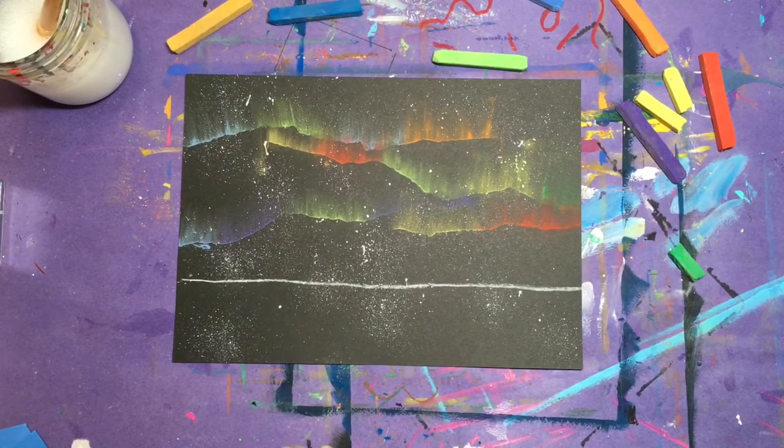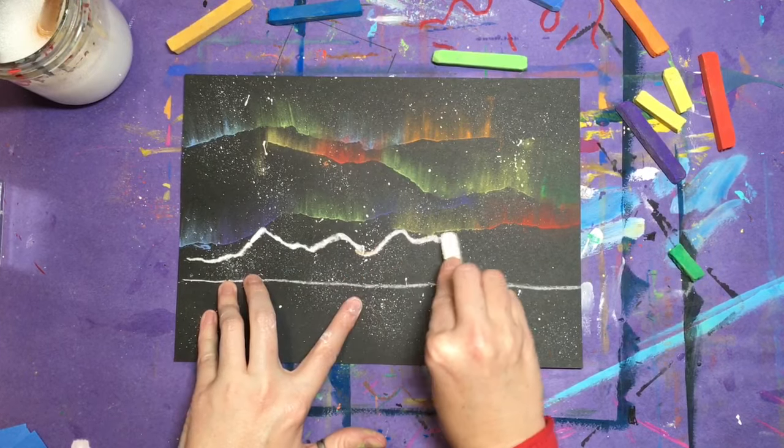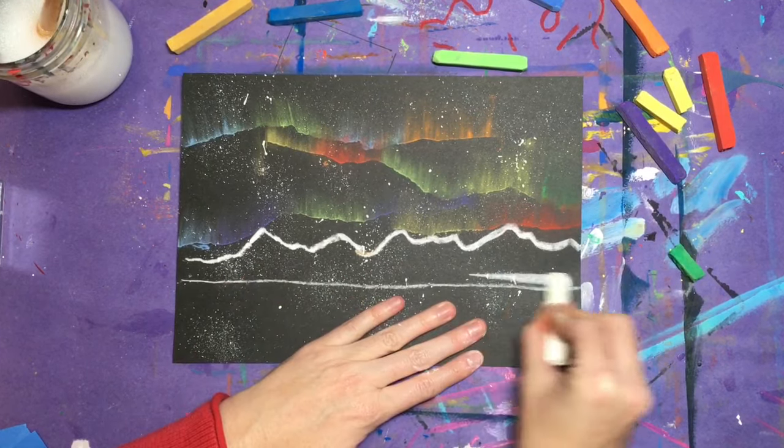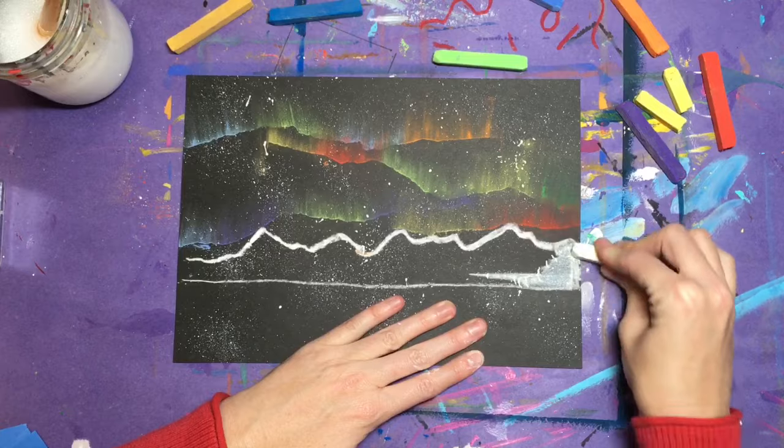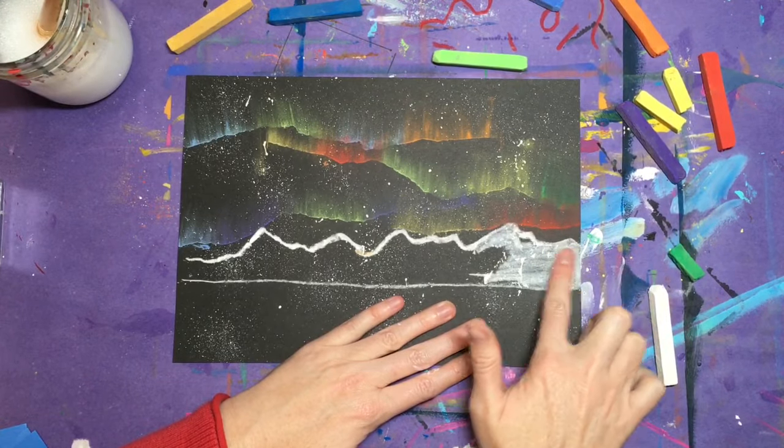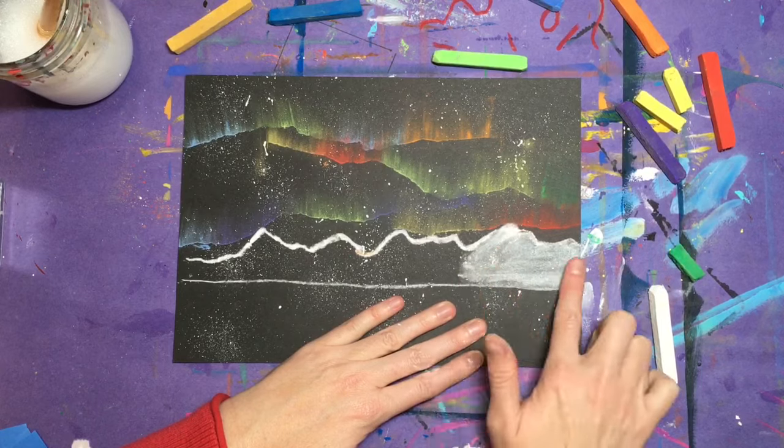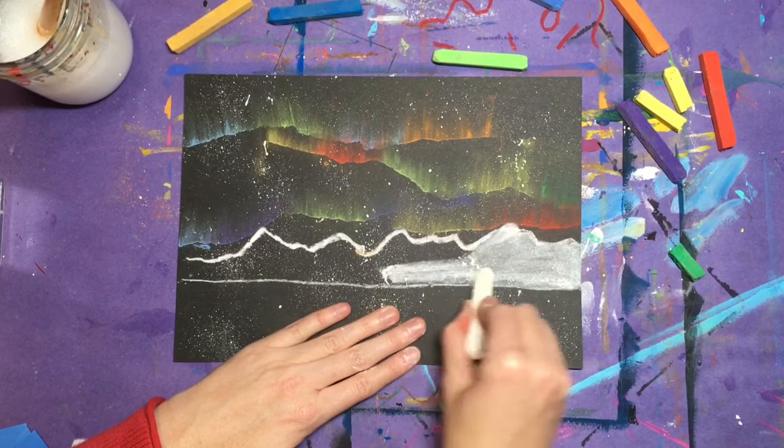The best places to view the northern lights are up north like Alaska and Canada, where it snows a lot. So let's add some snow-covered mountains to our picture. You can fill it in with the white chalk and then blend it by rubbing your finger over the paper. That will also help fill in the little spaces where your chalk might not be able to get into.